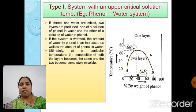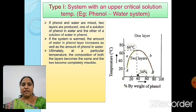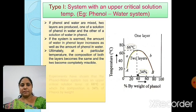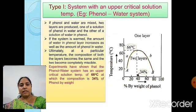The two layers become completely miscible at that temperature, which is considered the critical solution temperature. It varies with composition — for example, 10% phenol with 90% water has a different critical solution temperature compared to 90% phenol with 10% water. Experiments have shown that the phenol-water system has an upper critical solution temperature of 66°C, at which the composition is 34% phenol by weight.